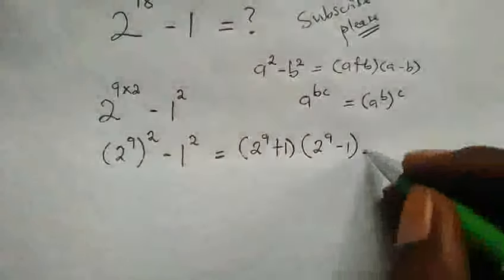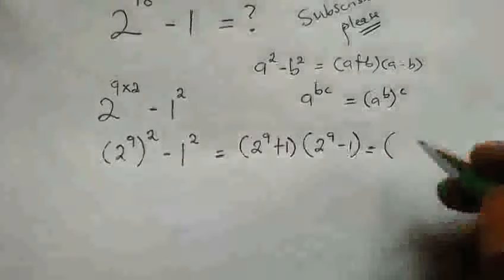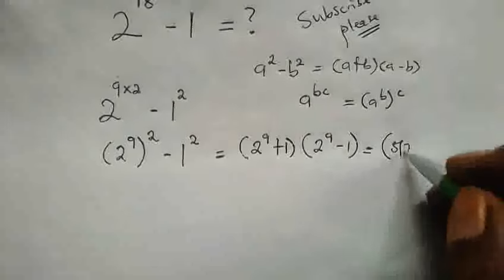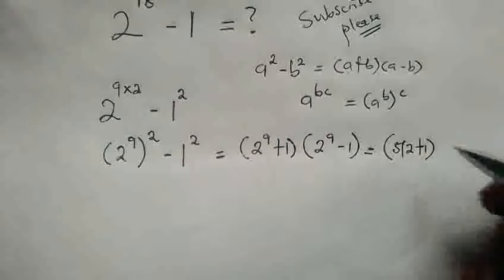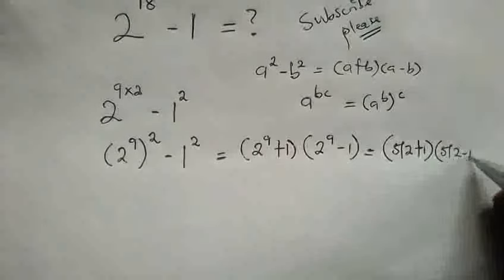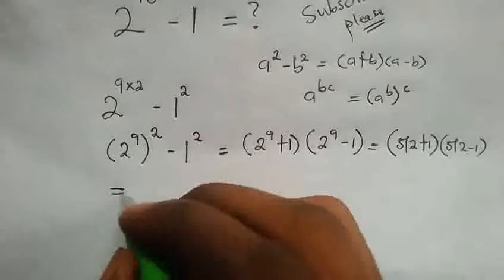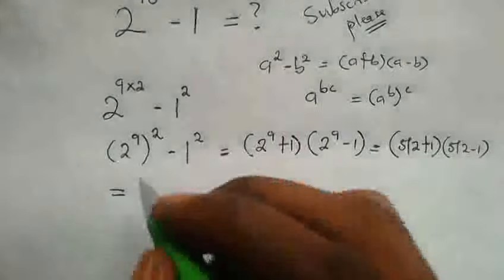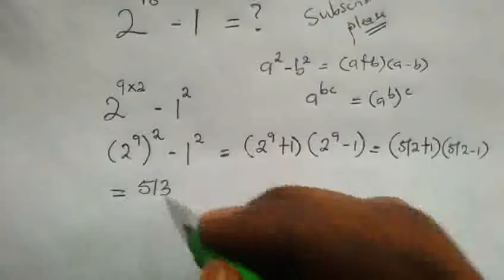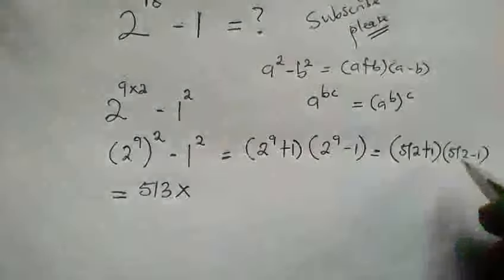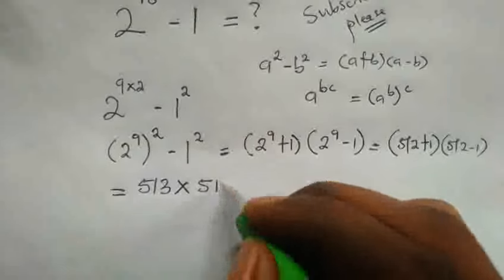Now we all know 2 raised by 9 is 512 plus 1 multiplied by 512 minus 1. So this is equal to 512 plus 1, that is 513, times 512 minus 1, that is 511.